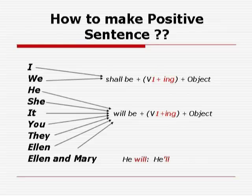How to make a positive sentence. It depends upon the subject. If the subject is I or we, then use helping verb 'shall be' plus V1 — V1 means first form of verb — plus -ing, plus object. The sentence will become: I shall be playing cricket. We shall be playing cricket. But in modern English, almost all speakers use the helping verb 'will be' with all subjects, including I and we.